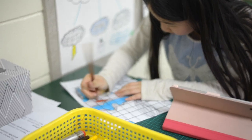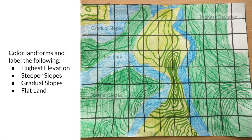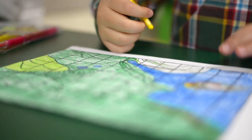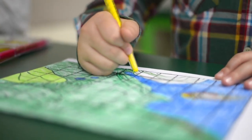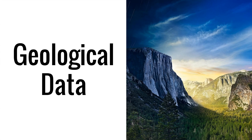And finally, they colored their landforms and then labeled the highest elevation, a steeper slope, a gradual slope, and flatlands. Next, students worked on gathering geological data. We chose to focus on the effects of weathering, erosion, and deposition on their region.